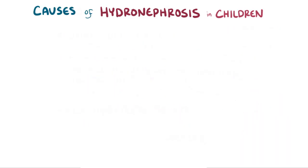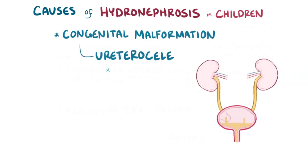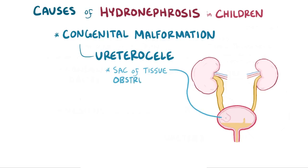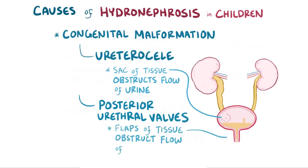In young children, hydronephrosis usually results from a congenital malformation, like a ureterocele — which is a sac of tissue in the distal ureter that obstructs the flow of urine from the ureter into the bladder — as well as posterior urethral valves, which is a malformation of the posterior urethra where flaps of tissue obstruct the outflow of urine.